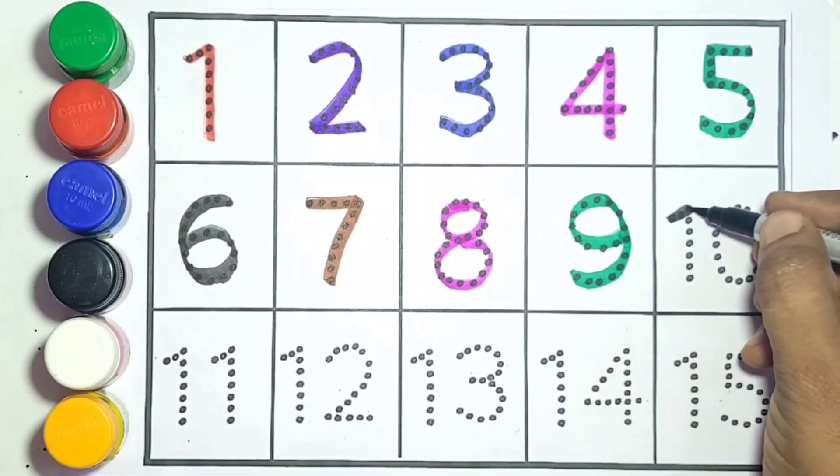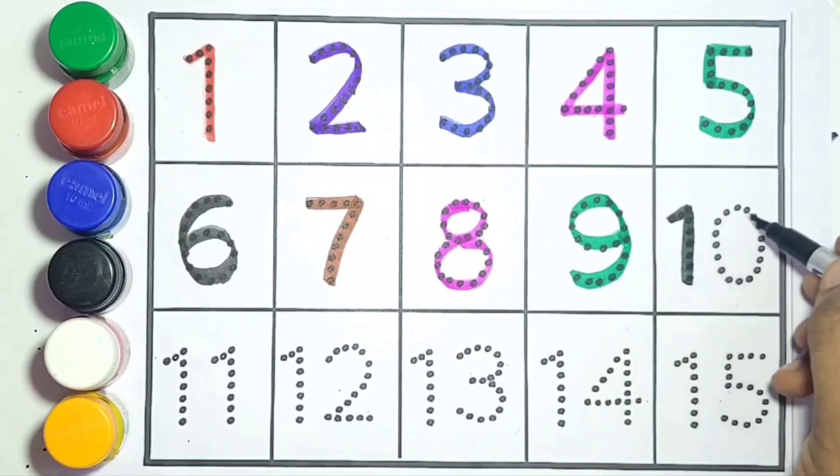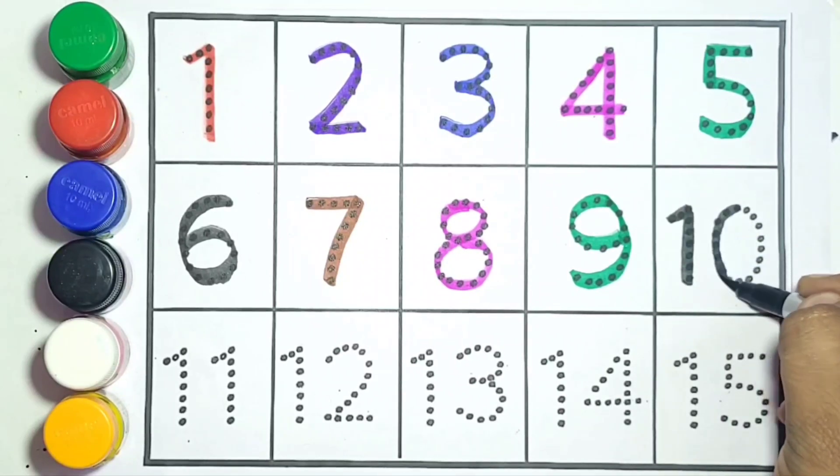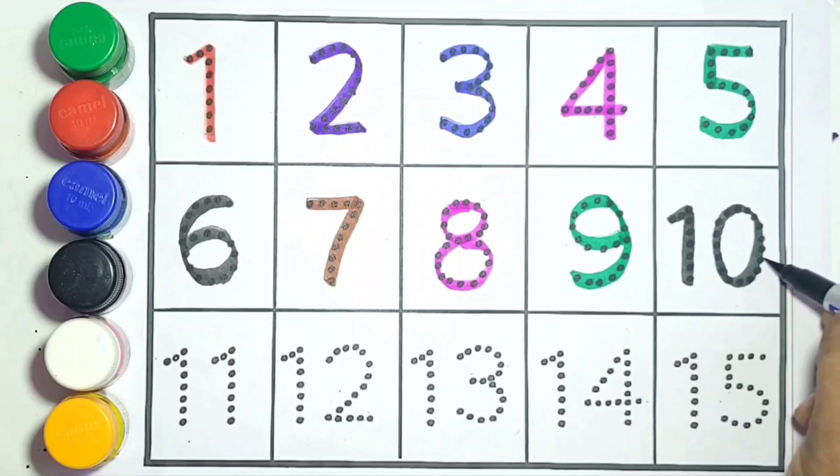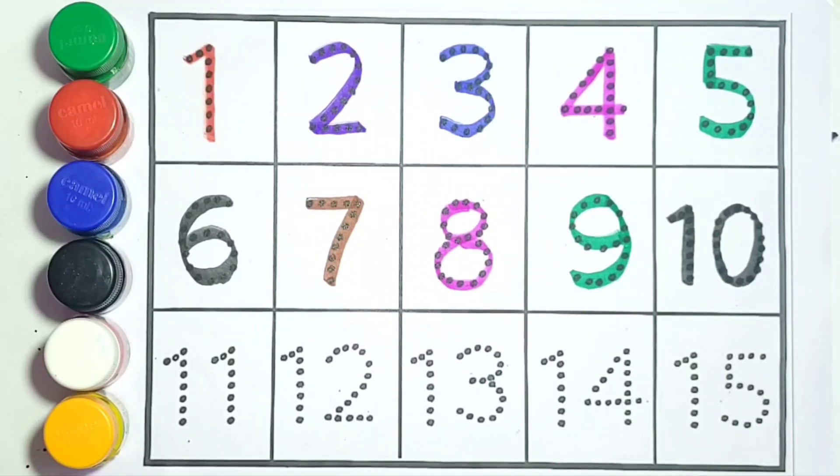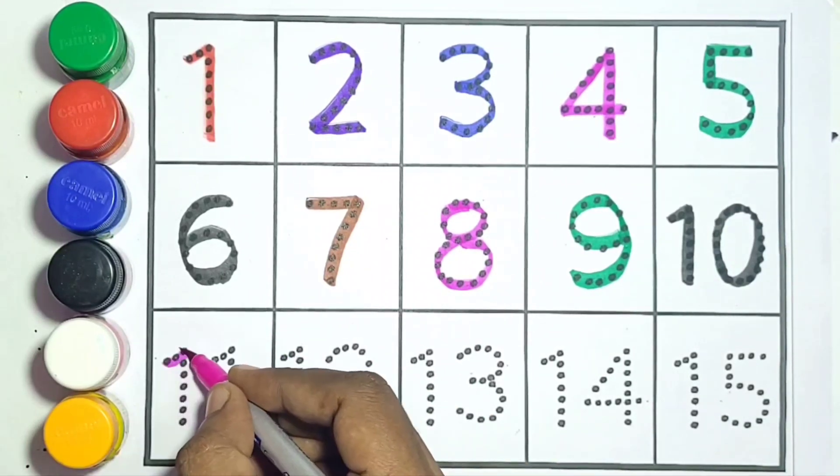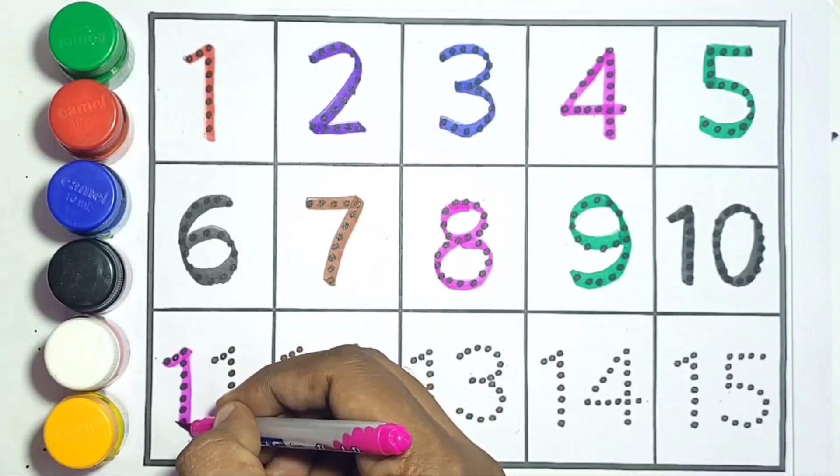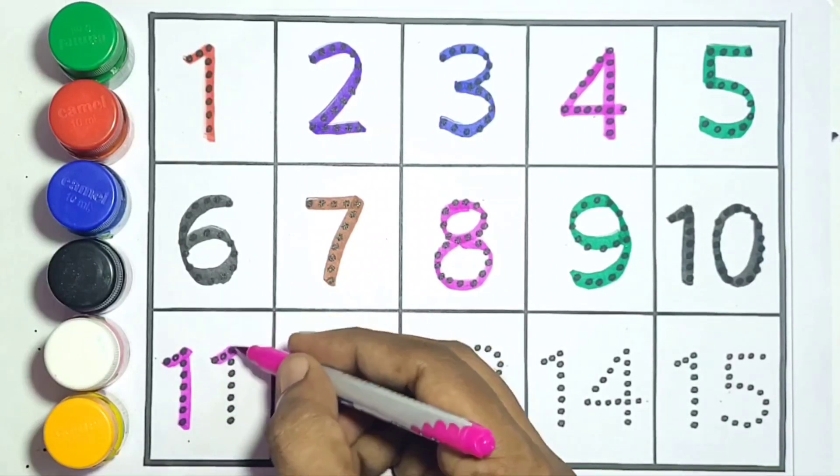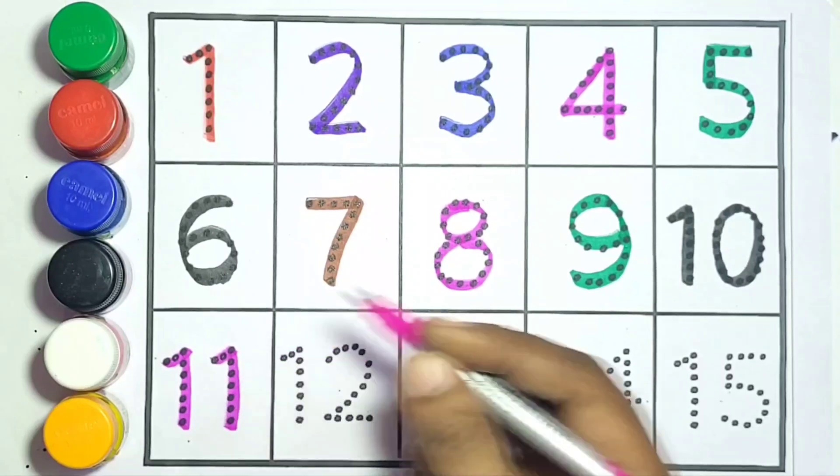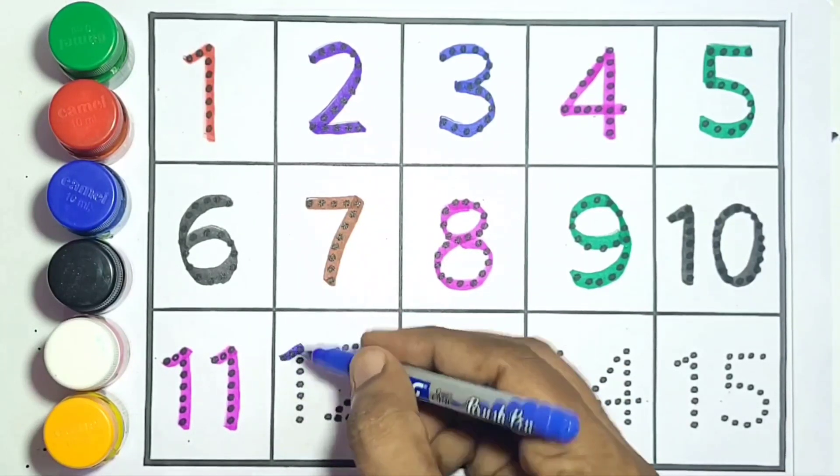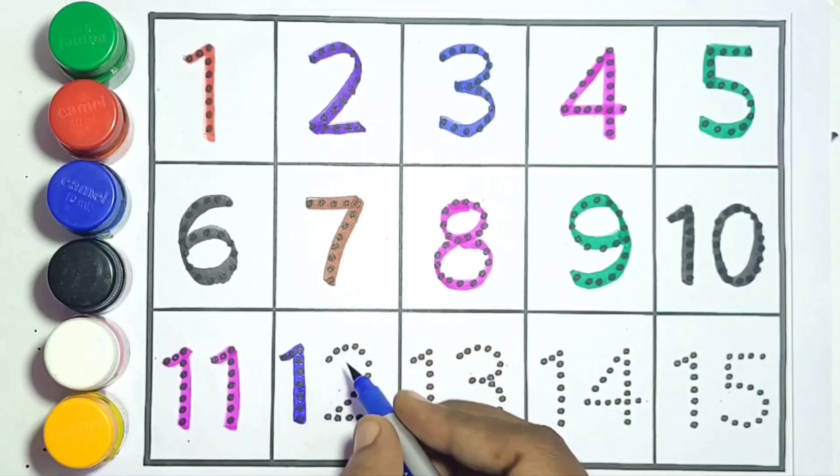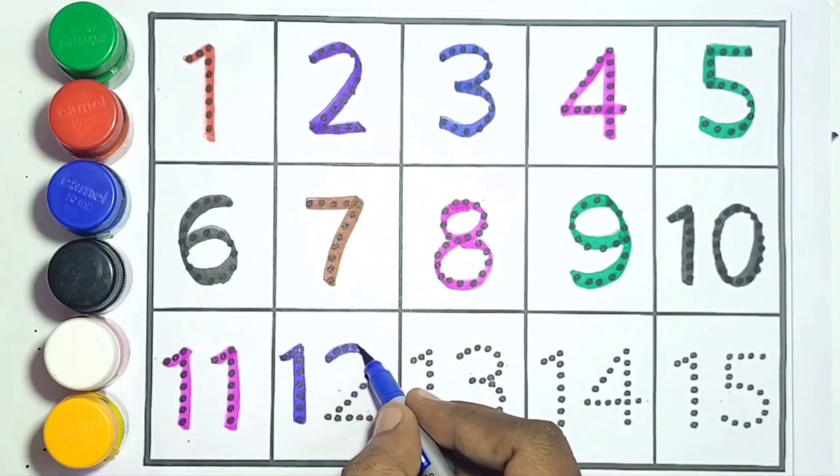Ten, this is number ten. Eleven, this is number eleven. Twelve, number twelve.